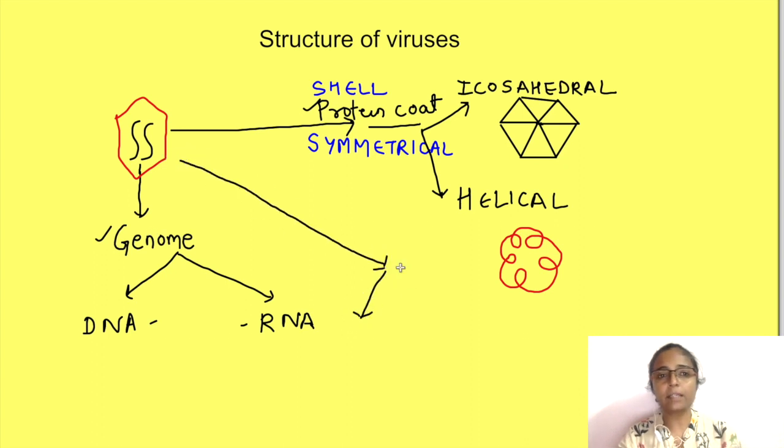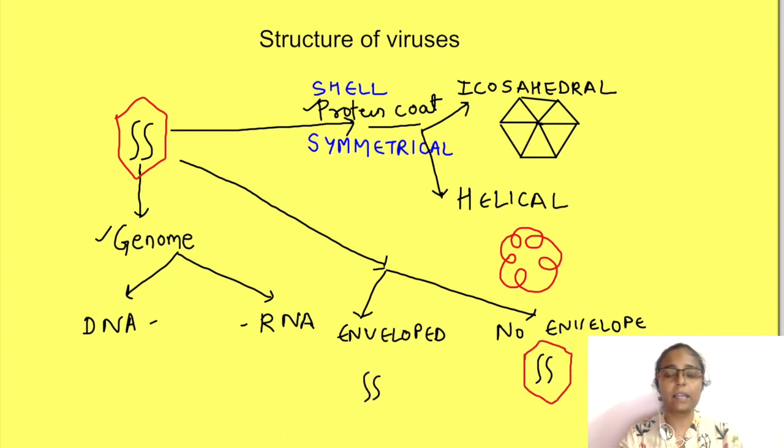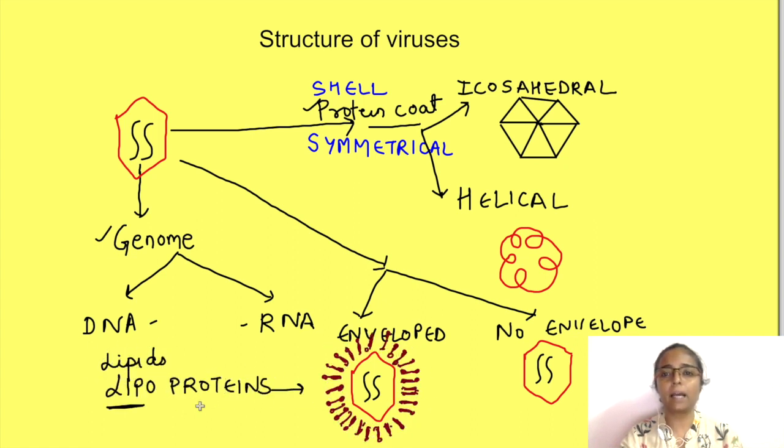With this some viruses may be enveloped while some may not be enveloped and have only this protein coat. These are known as naked viruses. In the enveloped viruses, the envelope is made up of lipoproteins, lipid and proteins. The lipids are derived from the host cell membrane which the viruses infect and they acquire it while they are leaving the cell. While the proteins are synthesized by the viral genome using the host machinery. So this is the basic about structure of viruses.